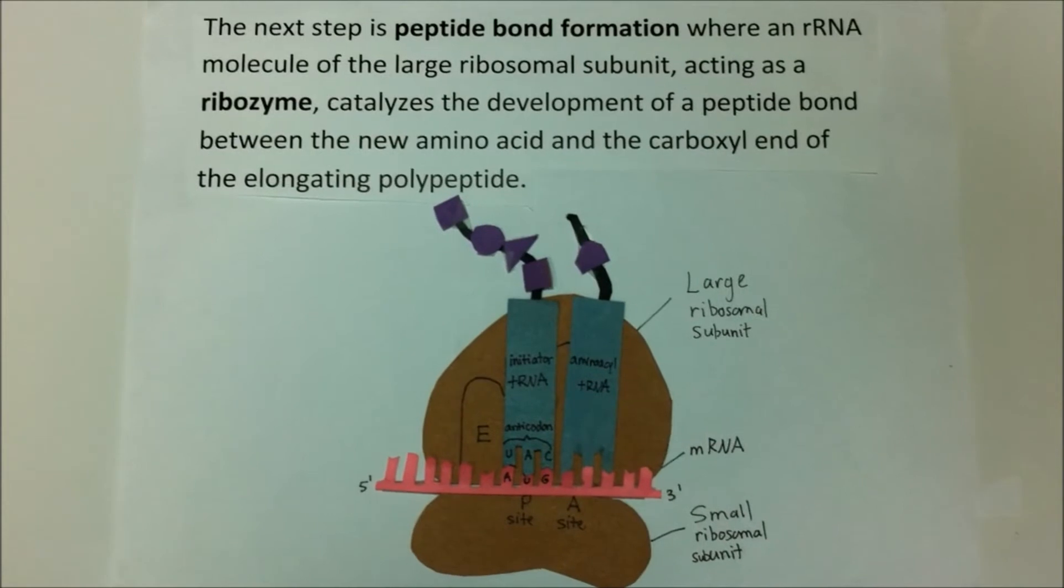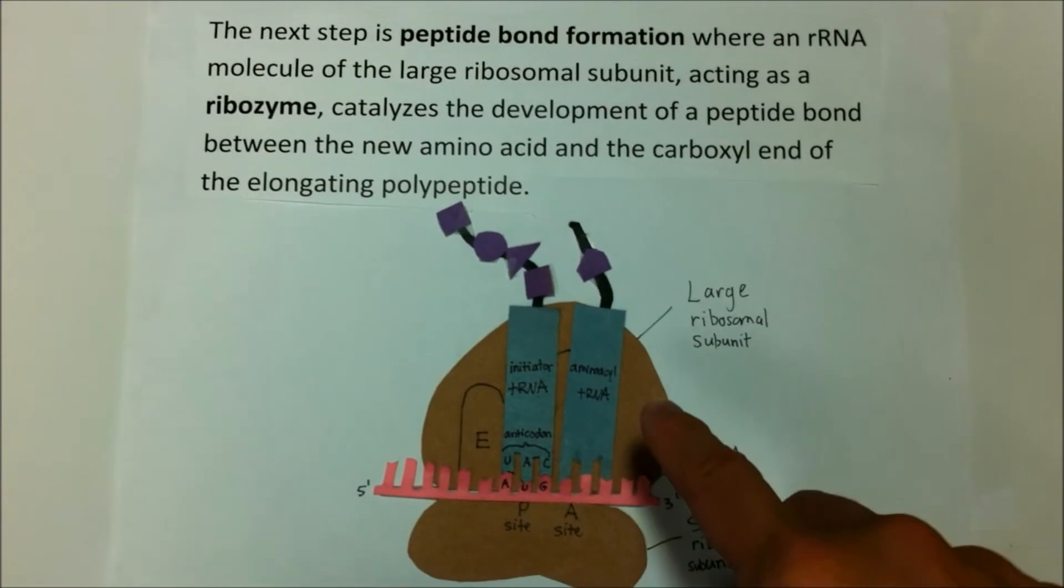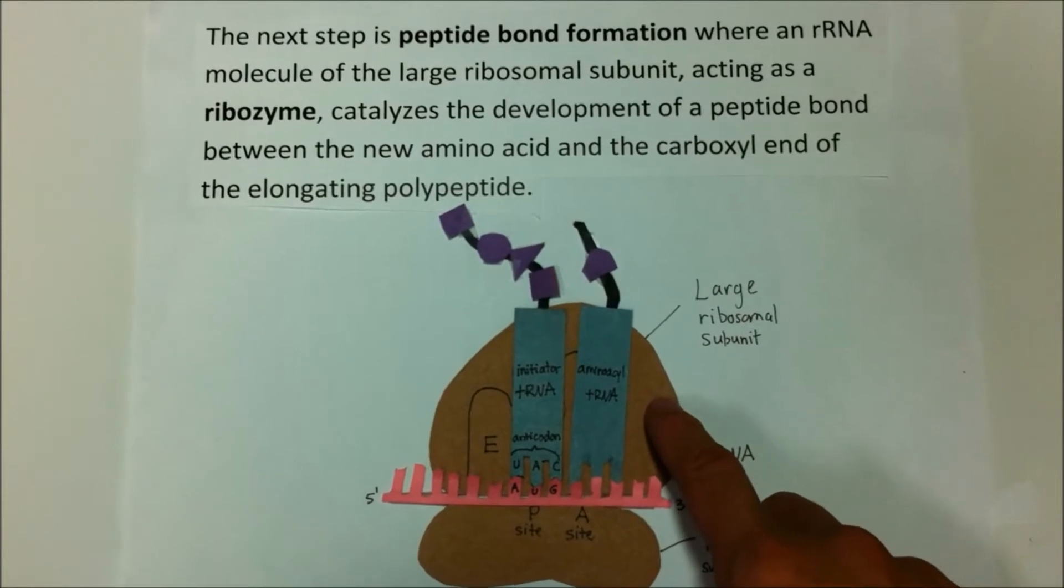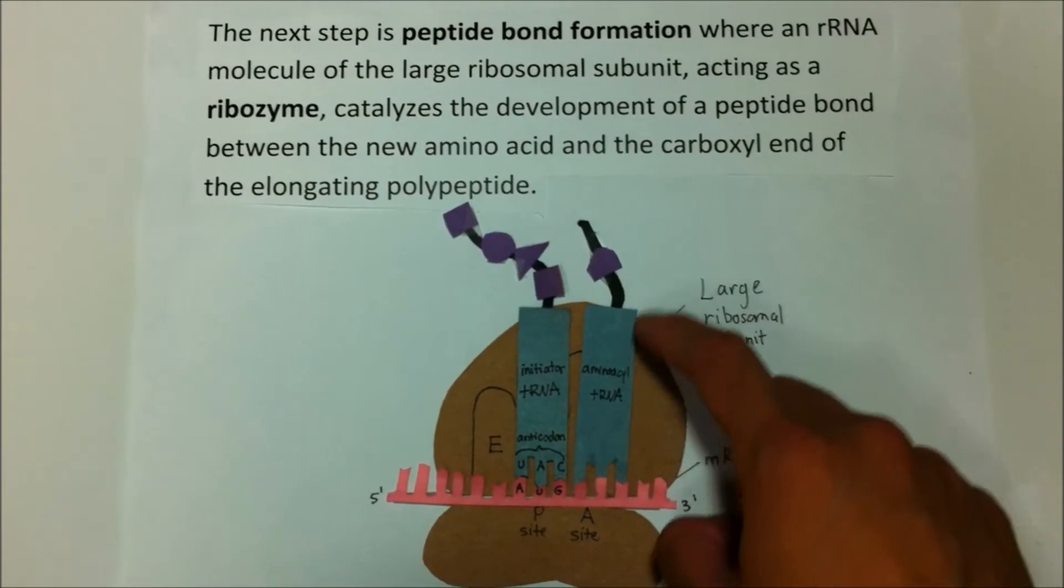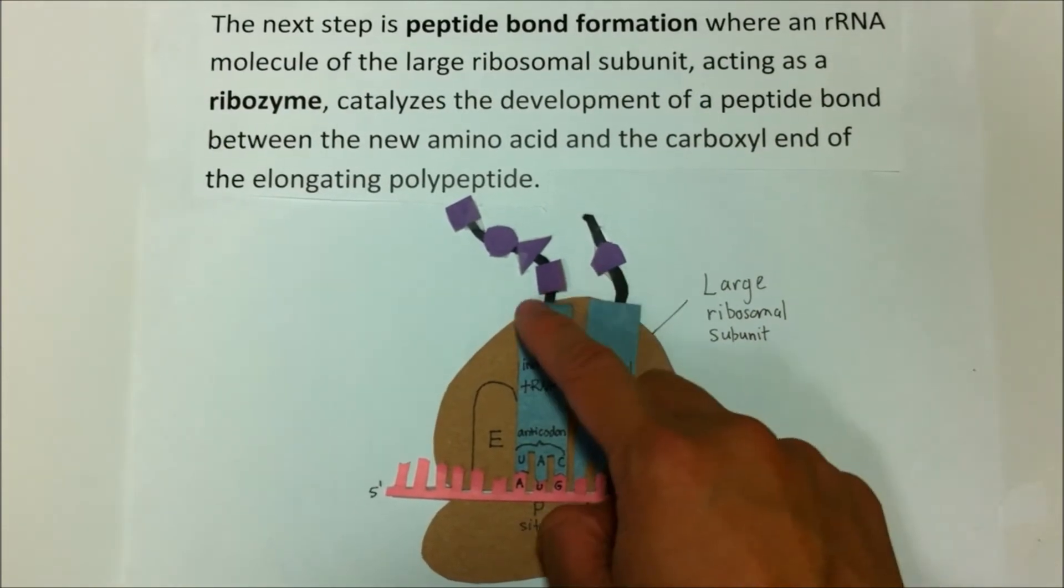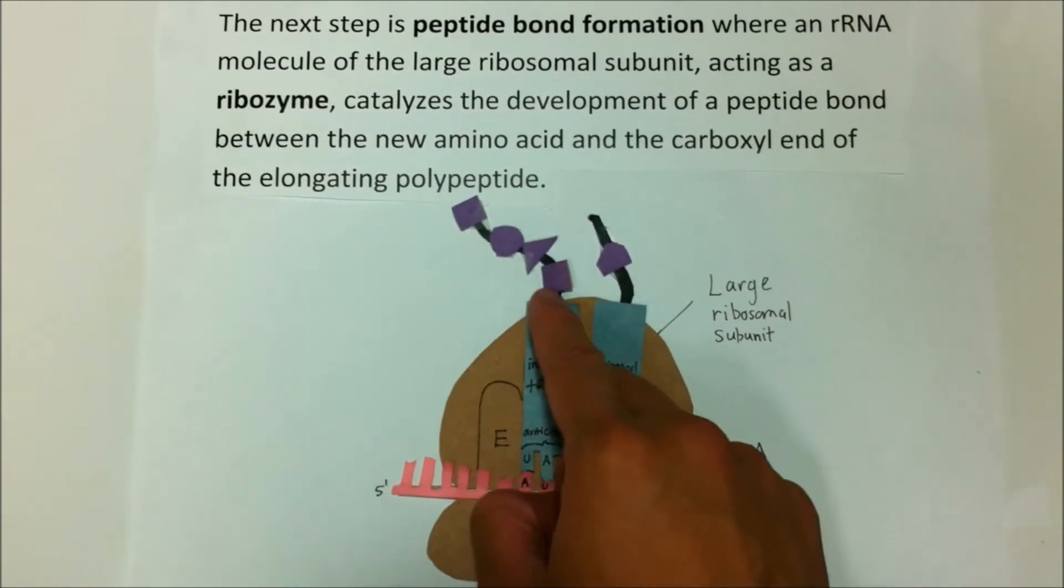The next step is peptide bond formation, where an rRNA molecule of the large ribosomal subunit, acting as a ribozyme, catalyzes the development of a peptide bond between the new amino acid and the carboxyl end of the elongating polypeptide.